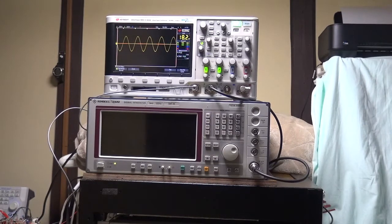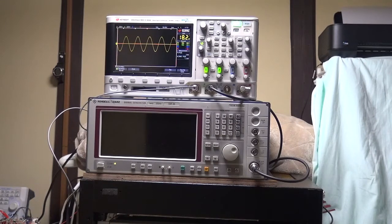First of all, what you see on the oscilloscope on the top, the Keysight 200 megahertz oscilloscope, you see a 10 megahertz signal from another signal generator which I use as a reference just to illustrate how they compare to each other.